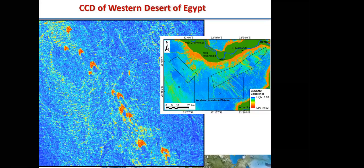For desert environments, we can also detect dynamic sand dunes using CCD. Crescentic-shaped dunes show no coherence — meaning there is significant change — indicating they are moving. CCD is a relatively new methodology for detecting any change on the ground. We can use it alongside optical change detection methods. We have published many manuscripts using CCD methods for various change detection applications.